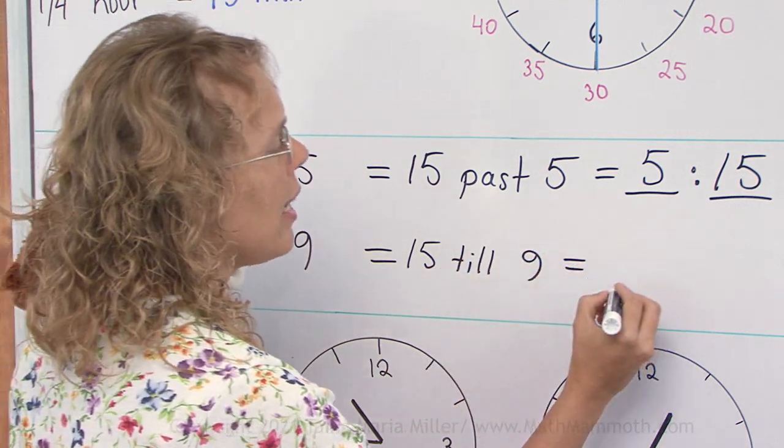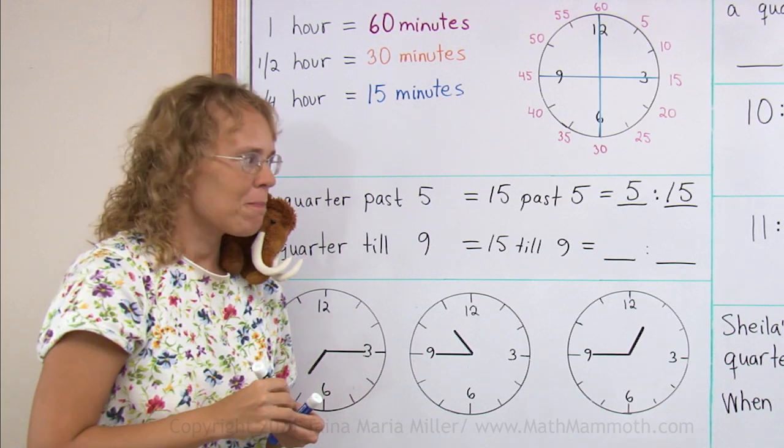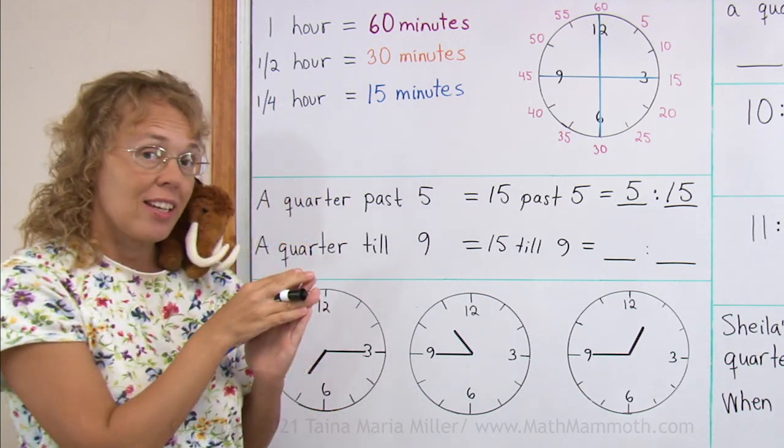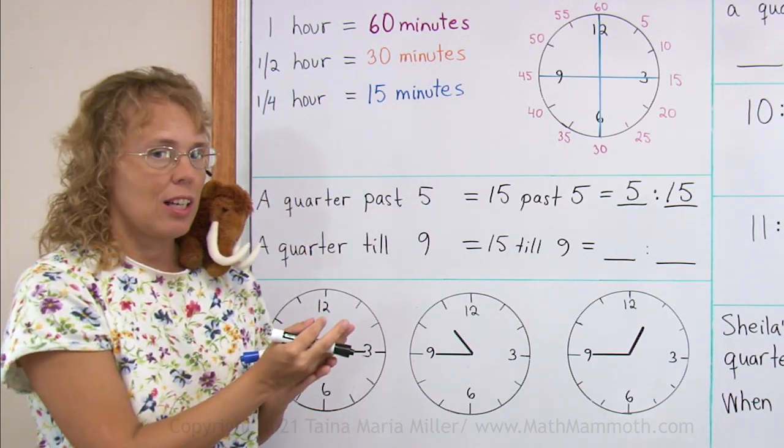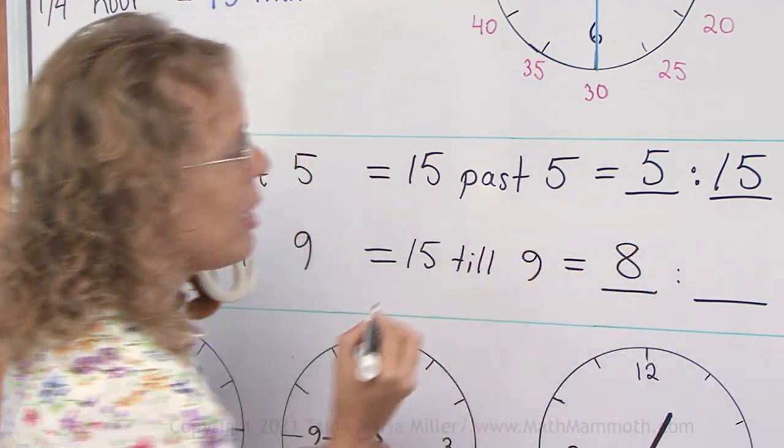Now how do we write that using the hours and minutes way? 15 till 9. It's not yet 9 o'clock, right? So the hours are still just 8 hours and so many minutes.